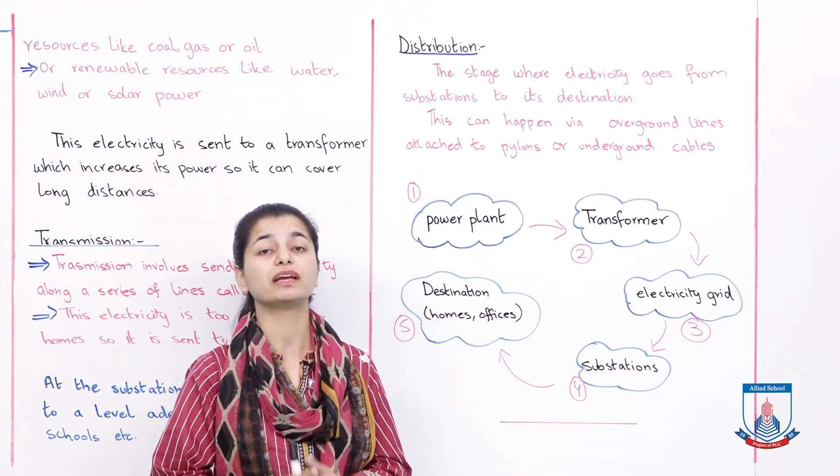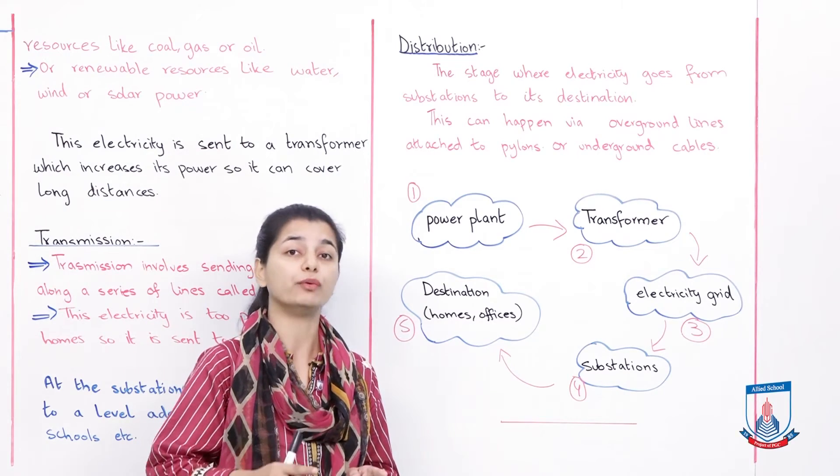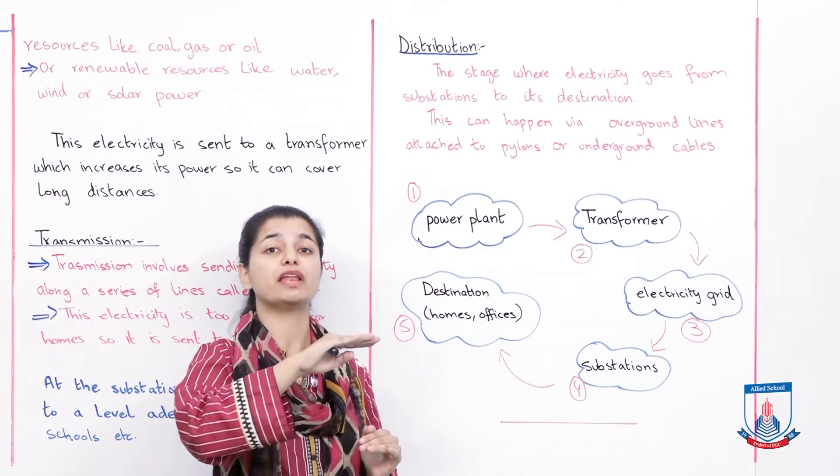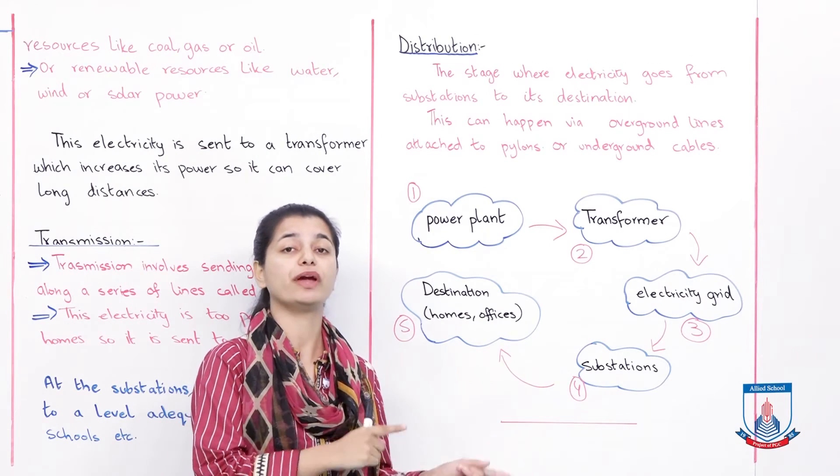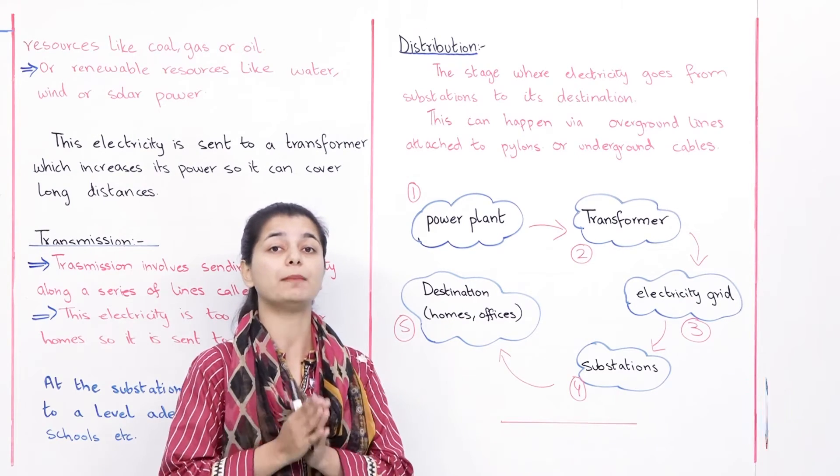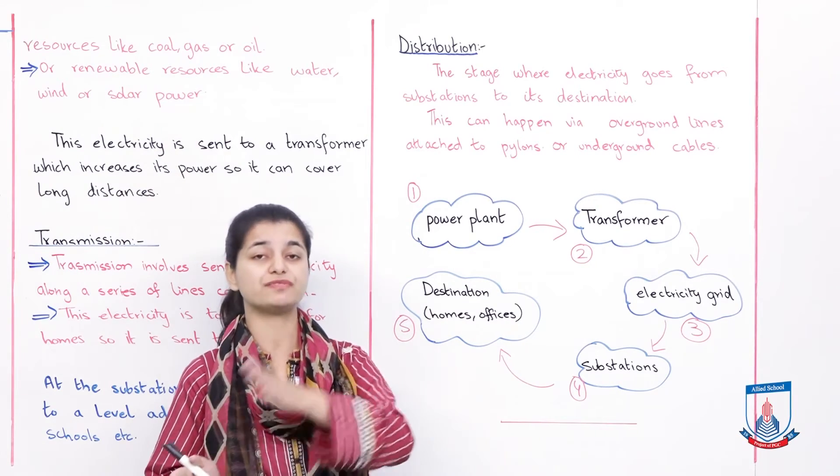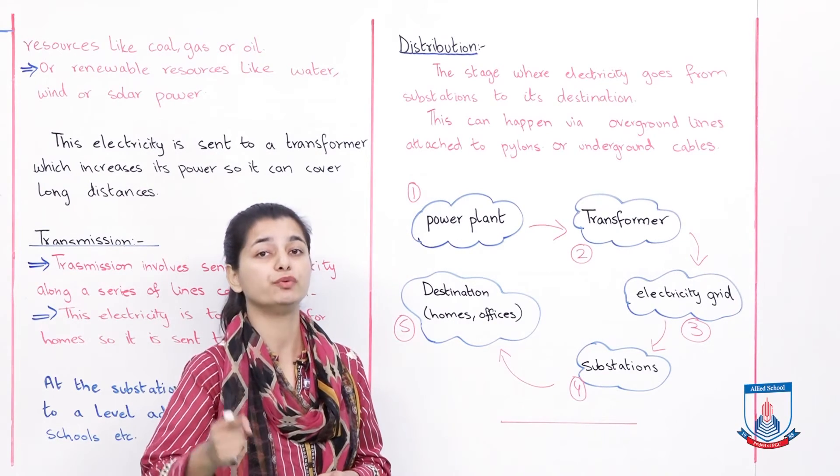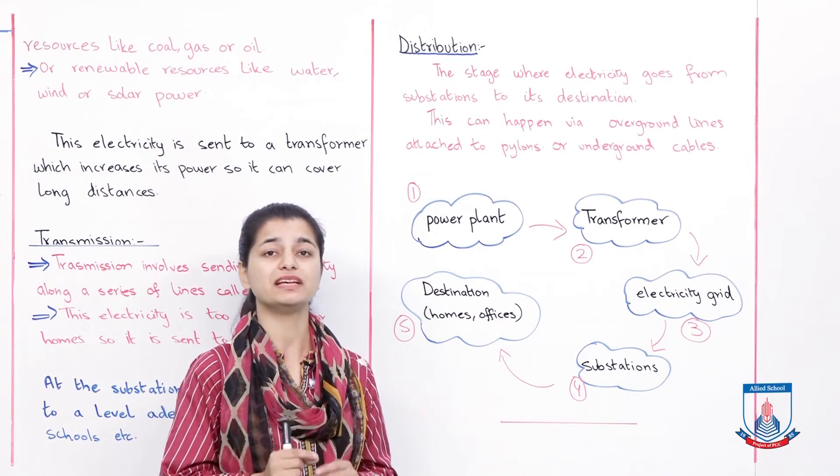There are two ways. Sometimes electricity travels overhead through overground cables - we see electricity wires all around above ground. But underground cables also carry electricity from one place to another. So this is different, but mainly the stage is called distribution where electricity moves from substations to its final destination. We generate electricity, we transmit it, and then we distribute it to homes or offices that require electricity.